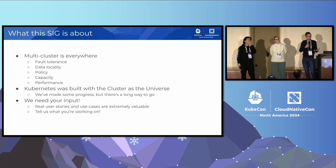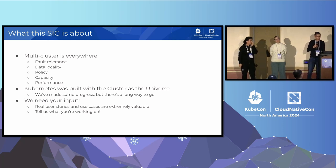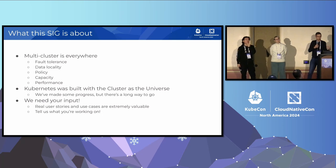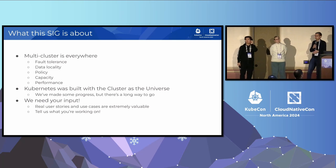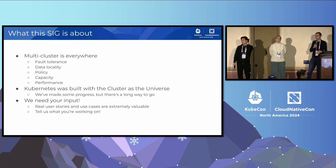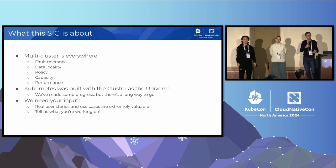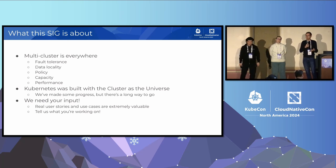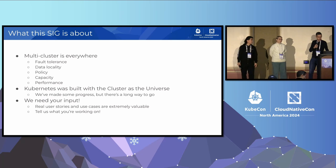Kubernetes was built with the idea that the cluster is the universe, to such an extent that for a long time there wasn't even an object inside Kubernetes that described the cluster. There was no notion of a cluster because that was all there was. When you try to think about multiple Kubernetes clusters, there's quite a long way to go before we cover everything. We've made some progress, but there's still quite a lot to do — and so we need your input. As end users, we are really interested in hearing what you've been trying to do, what you've managed to do, what you haven't managed to do, and even what your use cases might be.